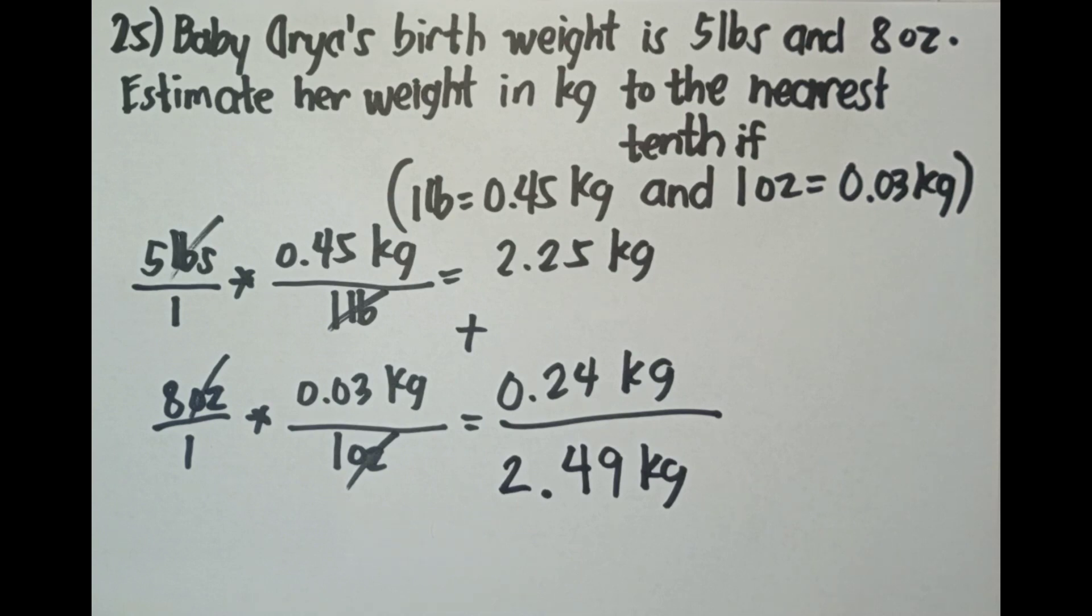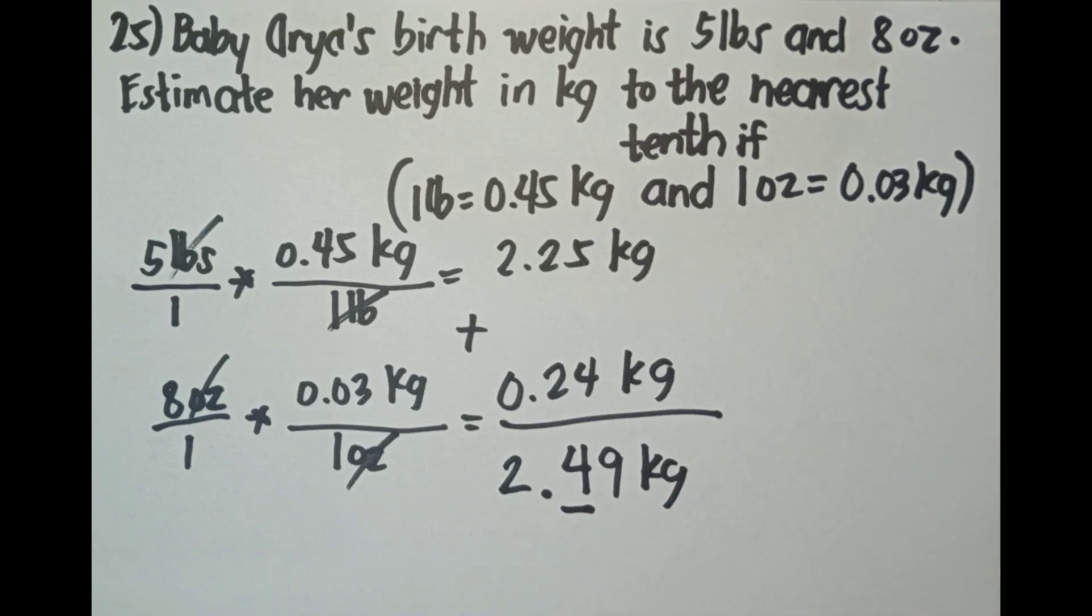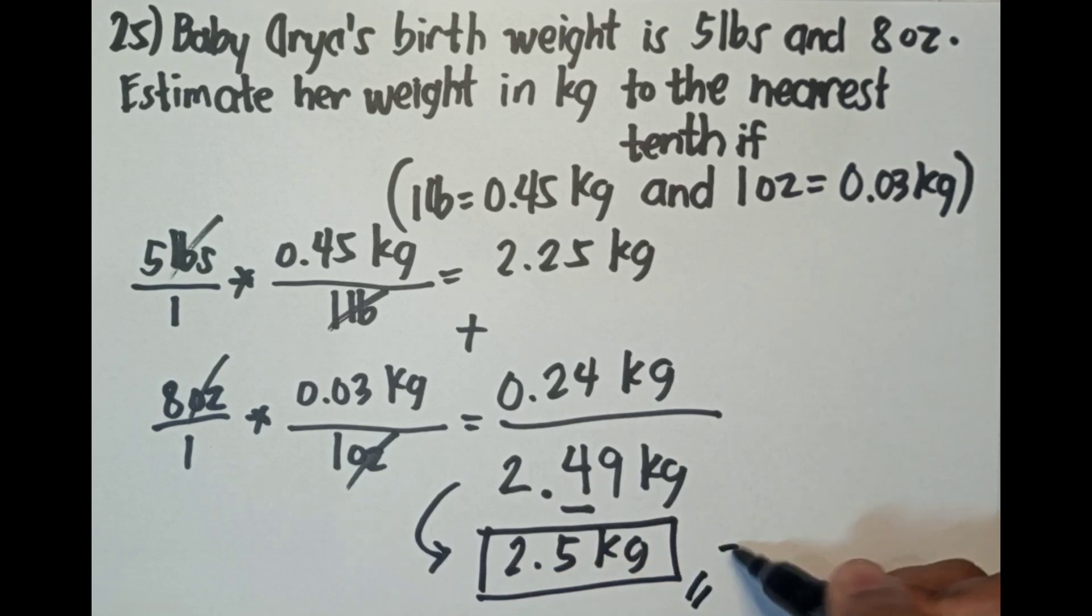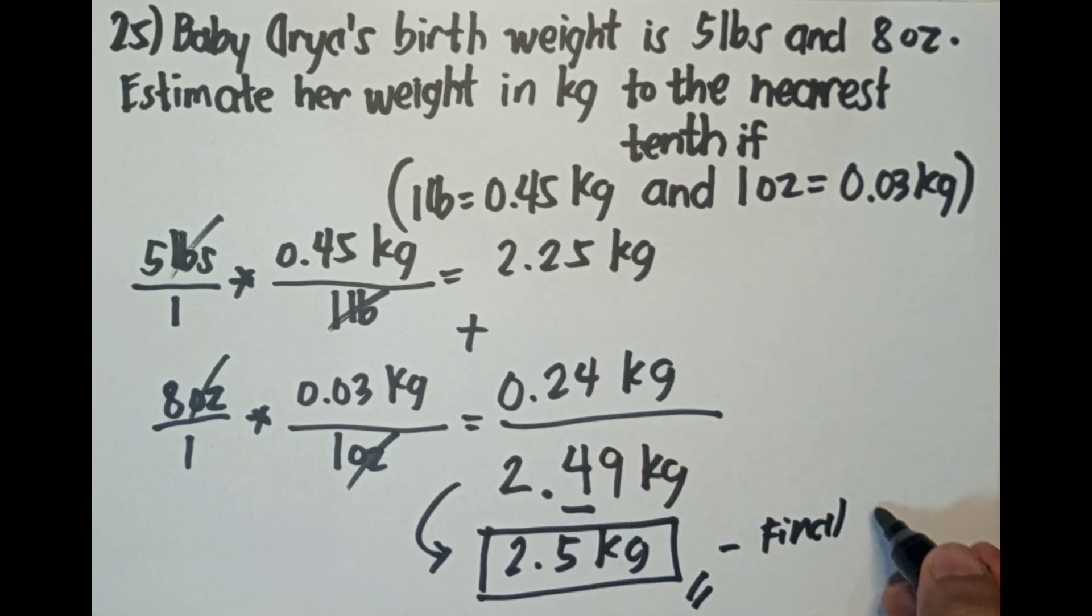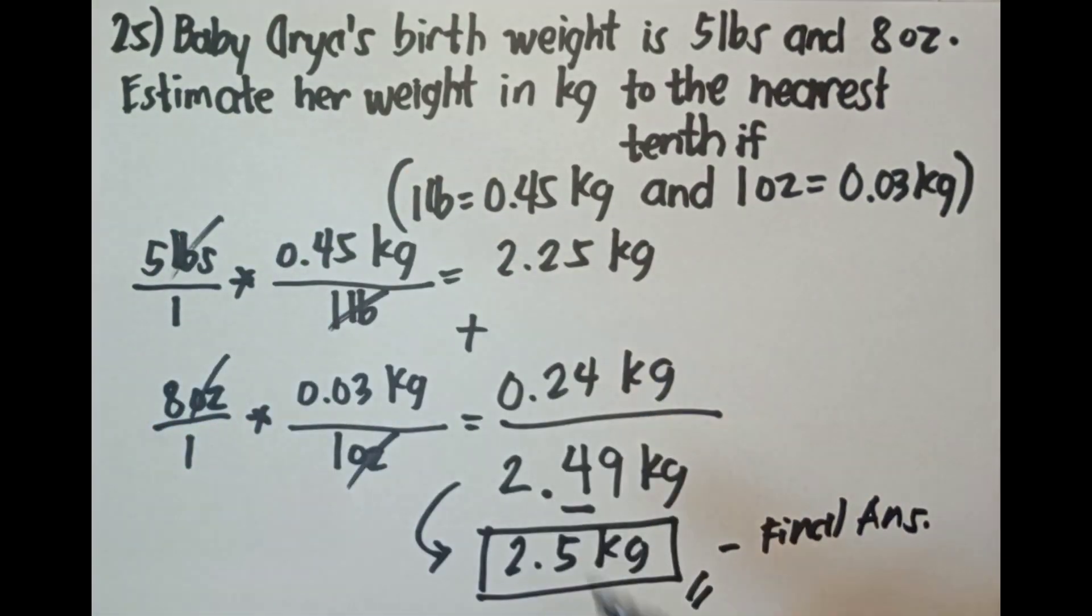Sabi dito sa tanong, estimate her weight in kilograms to the nearest tenth. Ito yung tenth. Tenth, ang susunod, hundredth. Ito yung tenth, walang once. Yung once dun sa whole number lang siya. Yung place value na once ay sa whole number lang siya. Sa decimal, tenth agad magsisimula. Tenth, hundredth, thousandth, and ten-thousandth. Yan, may t-h sa dulo. 2.49, i-round off natin ito, estimate. 2.5 kilograms. Mag-round off mo siya. This is the final answer. Hindi 2.49 kasi malinaw na sinabi sa problem, estimate her weight to the nearest tenth. 2.5 kilograms.